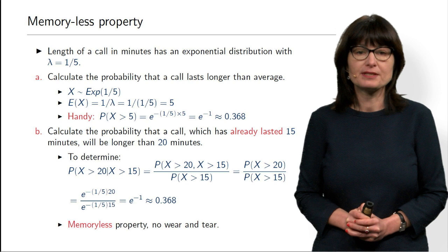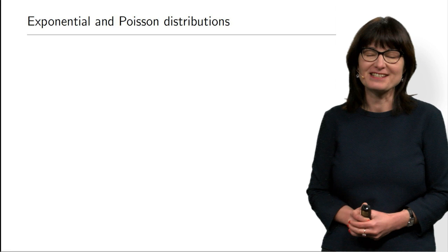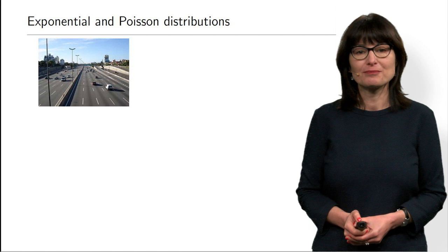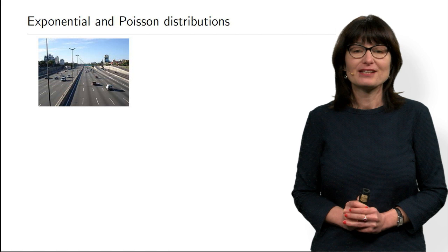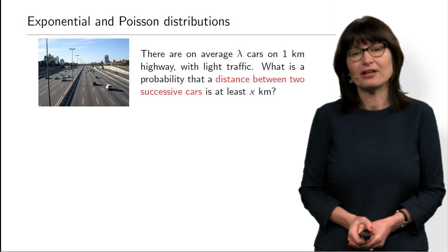That was the memoryless property. Now another very interesting property: the connection between exponential distribution and Poisson distribution. It works a little bit like magic, because it allows you to answer questions with very little information. Here is an example: we have a highway on a sunny Sunday — important because there is no traffic jam and the highway is not very busy. I will give this example with letters rather than numbers so you can appreciate the generality of the result.